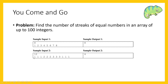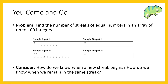For sample input 2, we notice right off the bat that we have a streak of length 3 at the beginning — a streak of 1s — followed by a streak of 2s, a streak of 3s, and another streak of 1s, for a total of 4 streaks. That's why the sample output is 4.